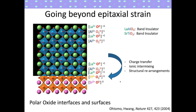Another way to tune properties in layered structures is by changing the interface polarity. One example is lanthanum aluminate on strontium titanate: if you grow a lanthanum aluminate film along the 001 direction on strontium titanate substrates and consider the ionic limits, strontium titanate has neutral strontium oxide and titanium dioxide planes, whereas lanthanum aluminate has alternating +1 and -1 charged layers. At the interface, due to this polar discontinuity, as the film grows thicker there's a divergent potential the system relaxes by charge transfer, intermixing, or structural polarization.